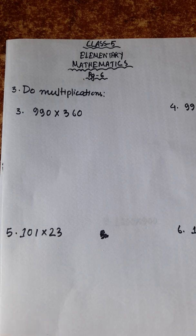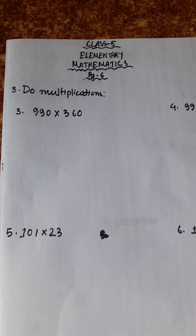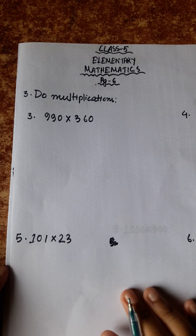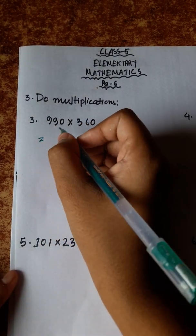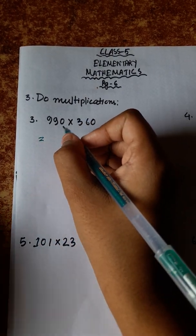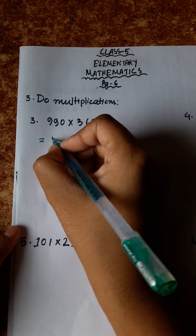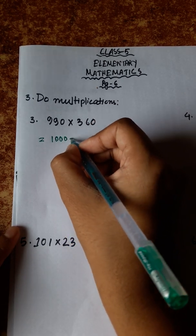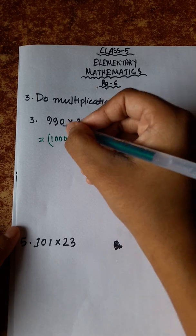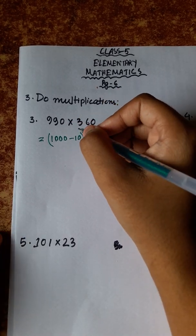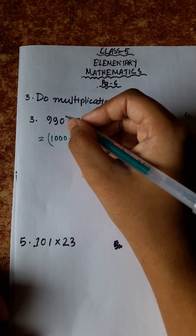Do multiplications — special ruler multiplications. So, 1,000 by 100 by 10,000 convert. Number 3: 990. We will convert 1,000. 1,000 minus 10 is equal to 990.